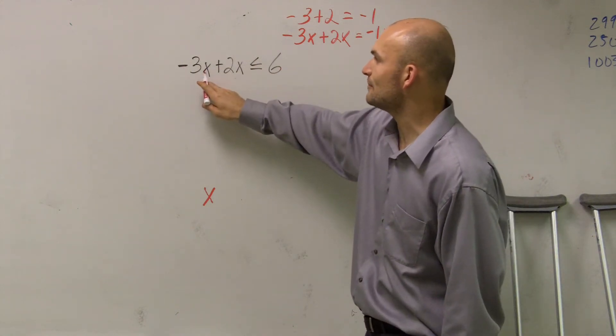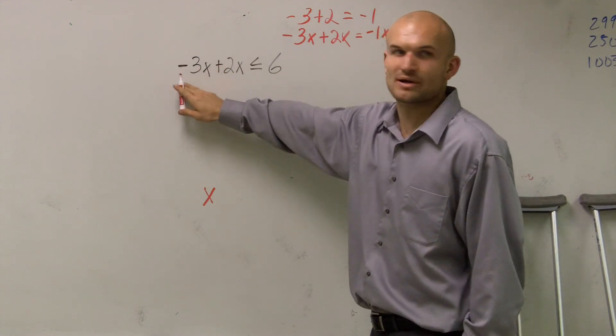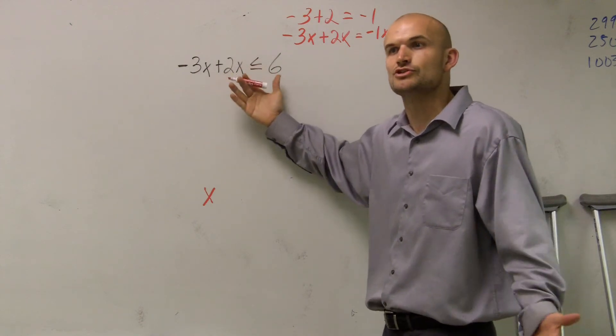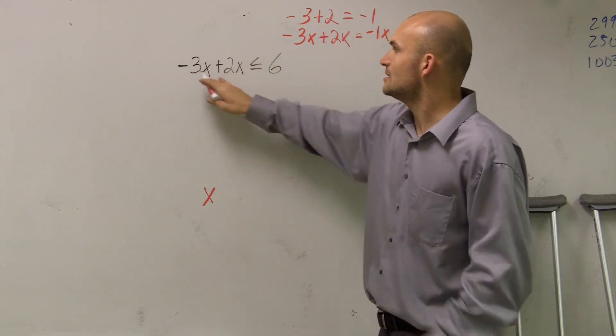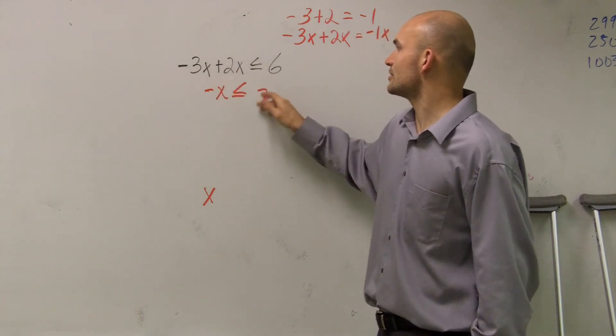The main important thing also to remember is, when you're looking at these two, you can't separate that 3. You can't be like, subtract 2 from there. Because that means this 2x, your 2 apples is combined with your x. So therefore, when I combine these two, I get negative x is less than or equal to 6.